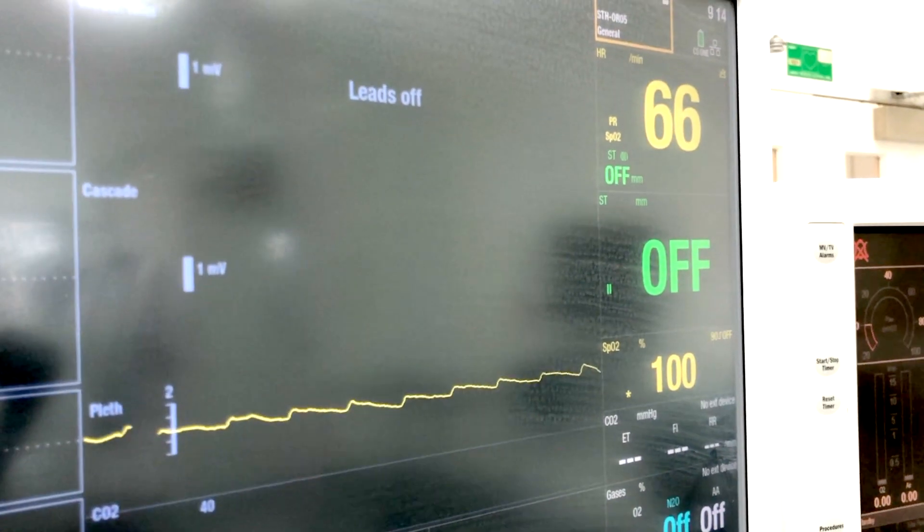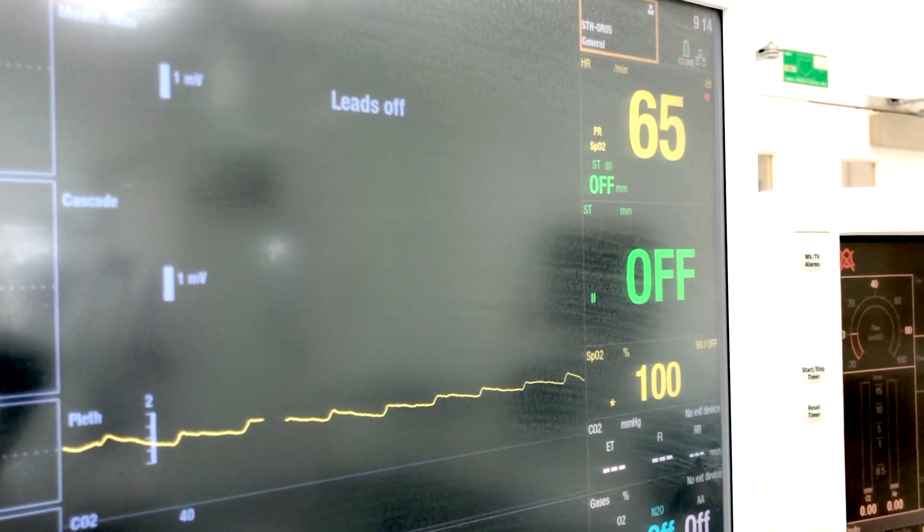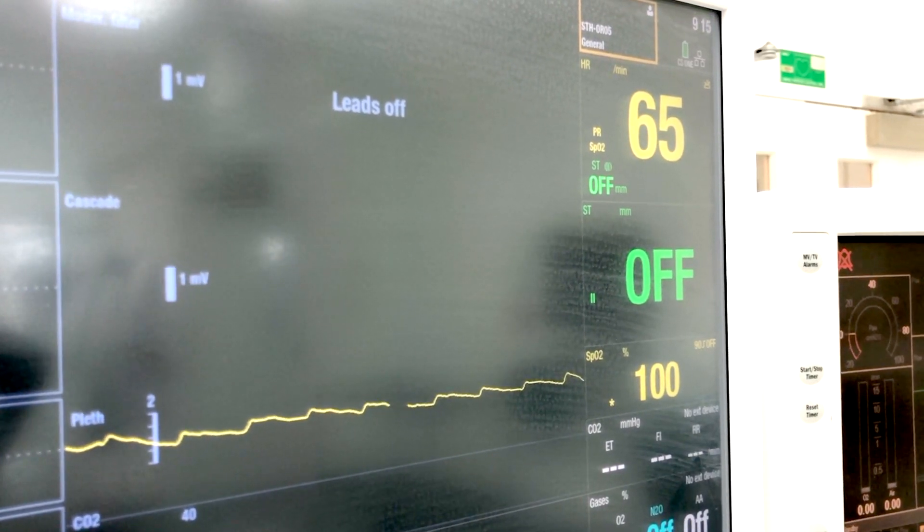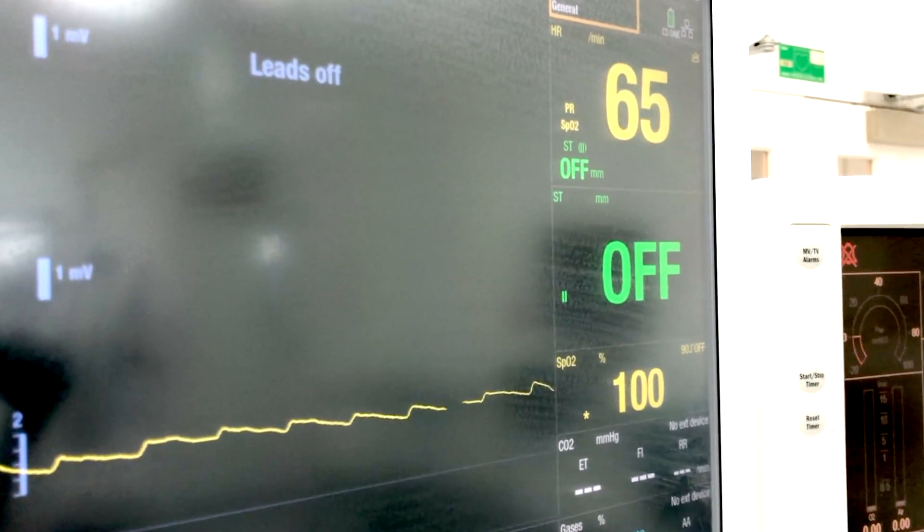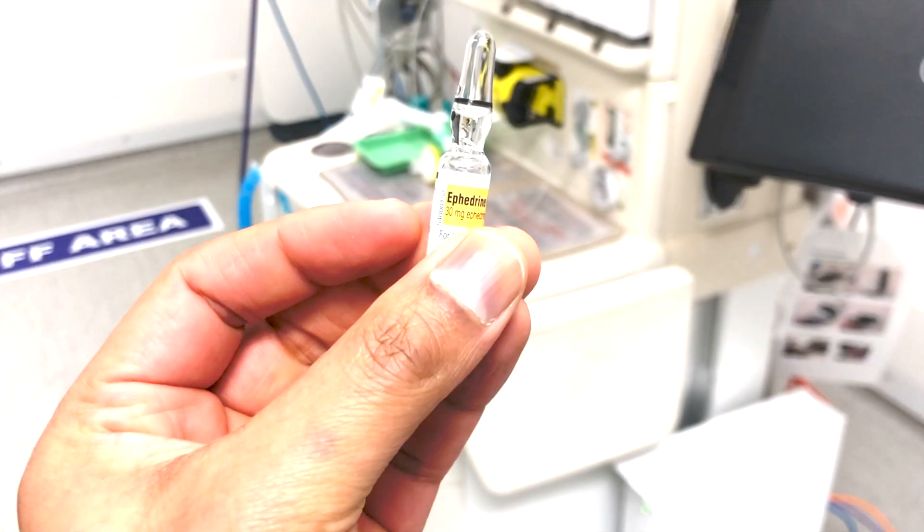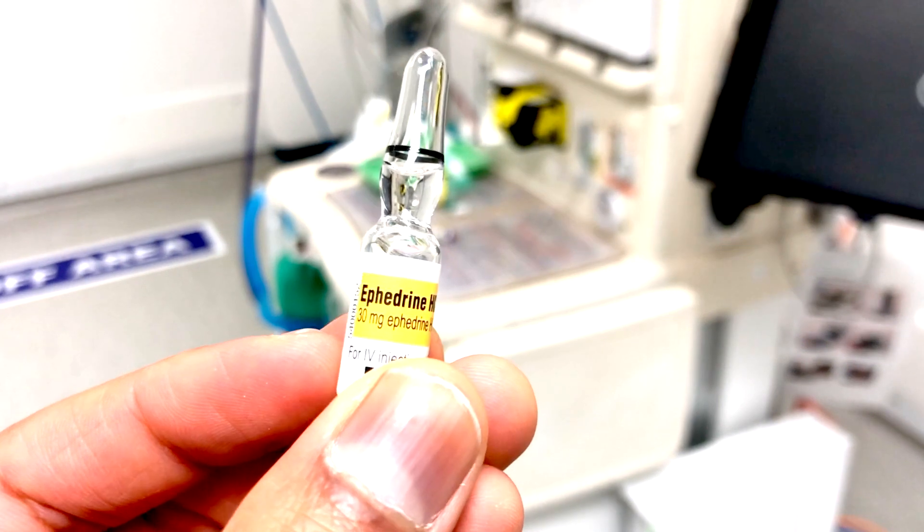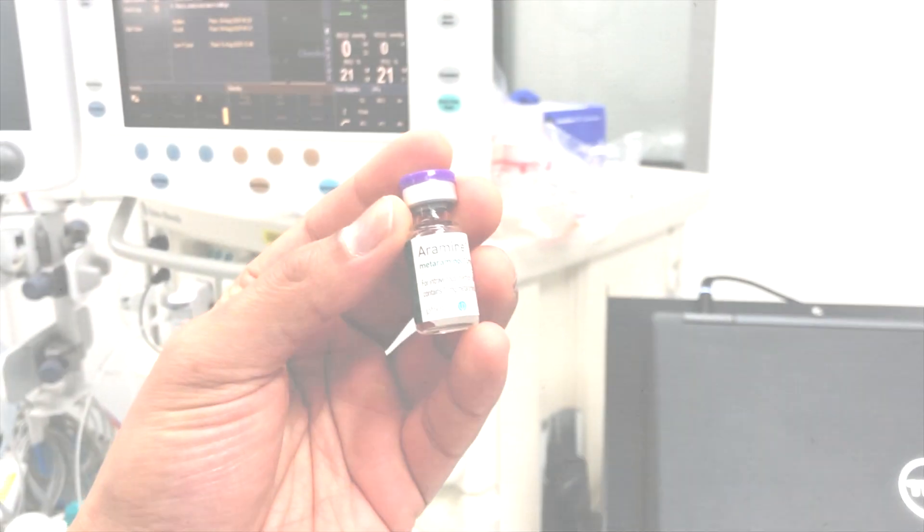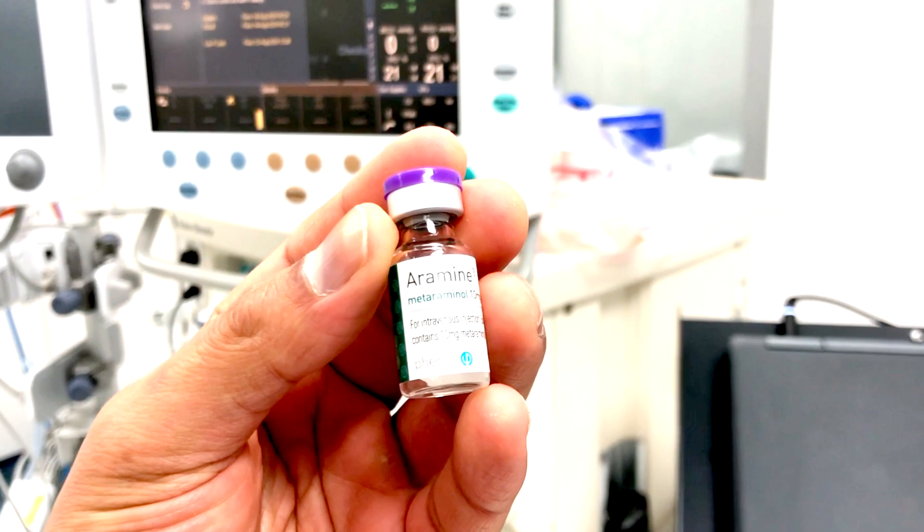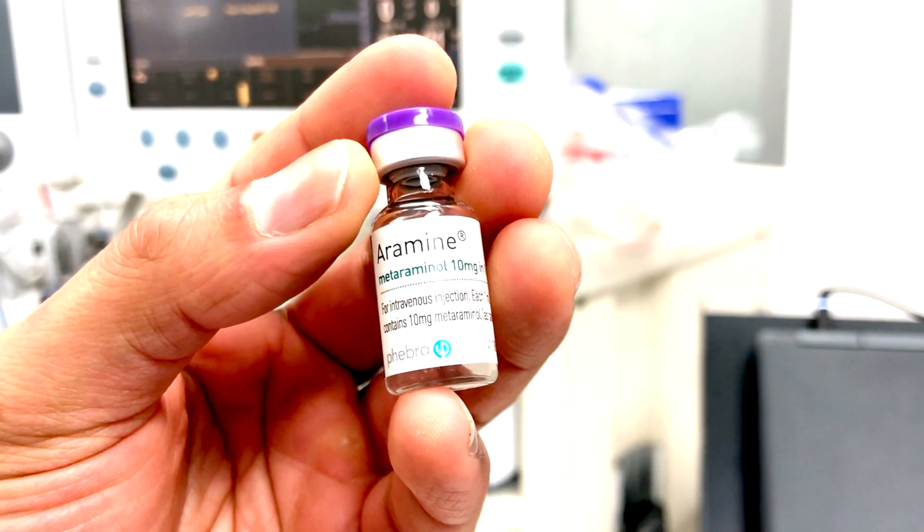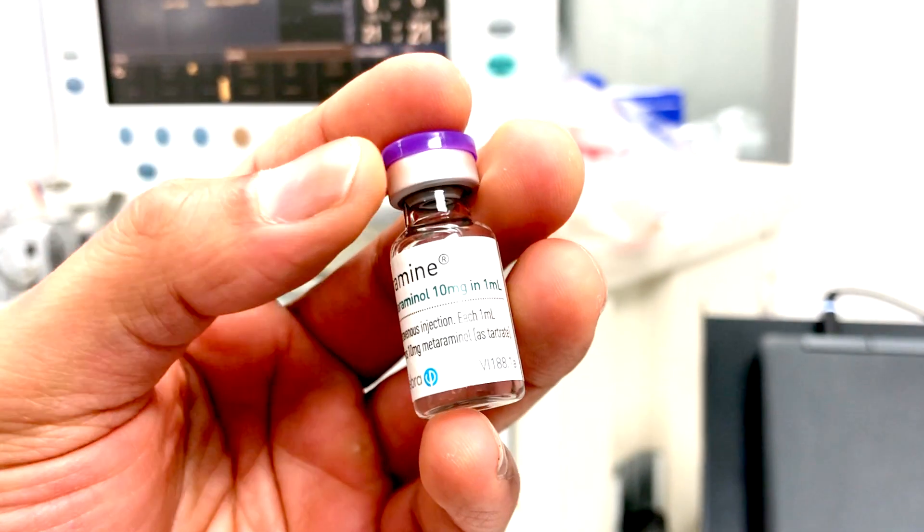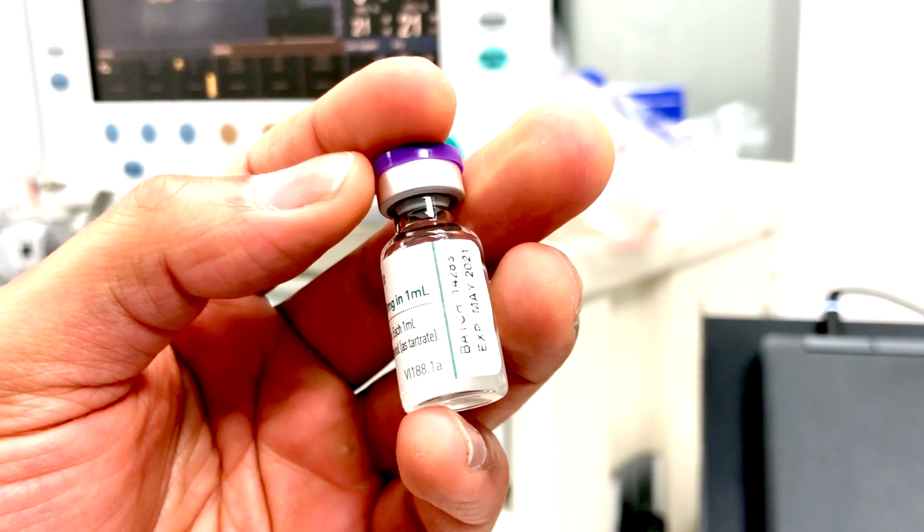So generally speaking, if the heart rate is above 60 beats per minute most anesthetists would treat hypotension with metaraminol, but if it's below 60 many would choose to use ephedrine. Be very careful when giving these medications. They're very concentrated solutions and must be diluted before administration. Do not give a whole vial of the solution. Often the dose for metaraminol is 0.5 milligrams and for ephedrine it starts around 3 to 6 milligrams.